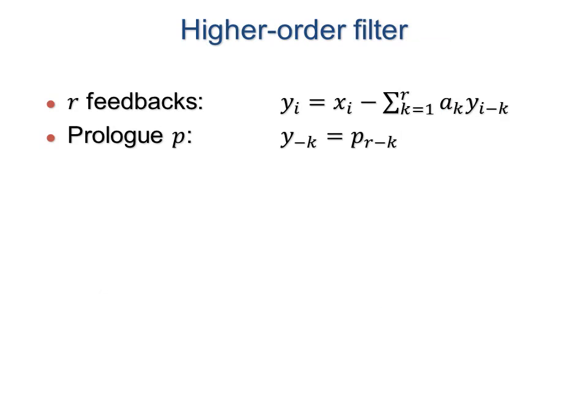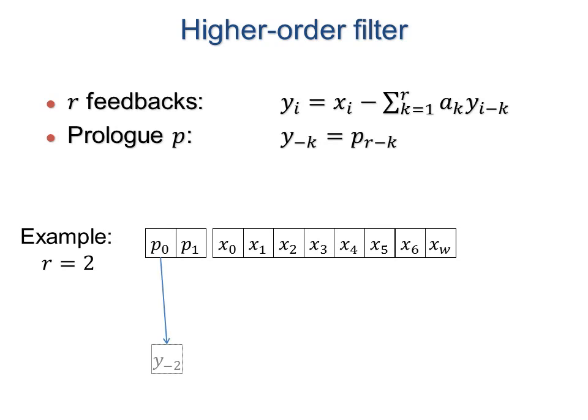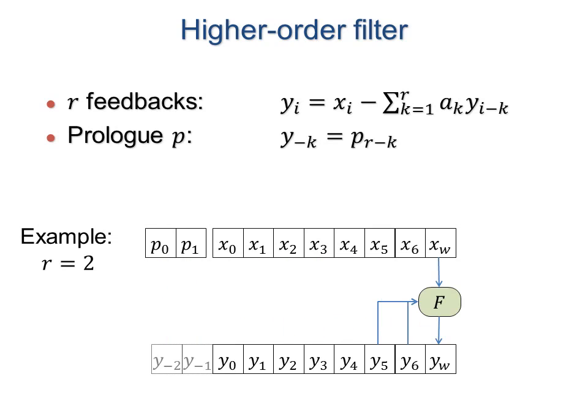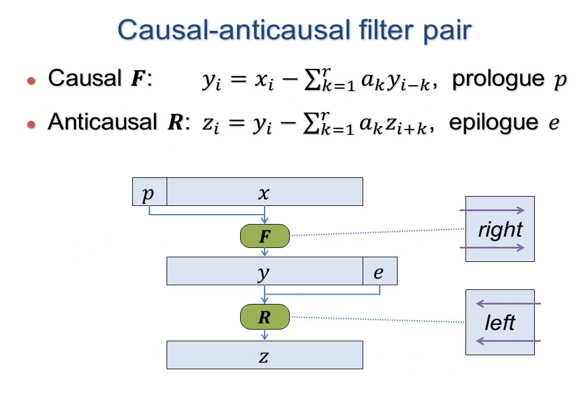A high-order filter uses feedback from several prior output values. A small prologue vector sets initial conditions, as illustrated here for a second-order filter. A causal filter uses feedback from elements on the left, whereas an anticausal filter has feedback from the right. These often appear in succession.